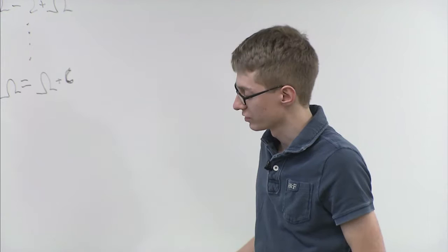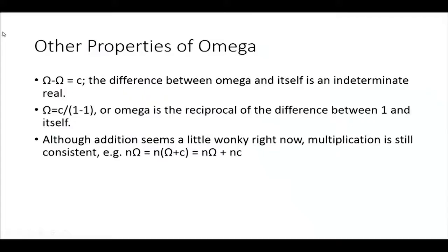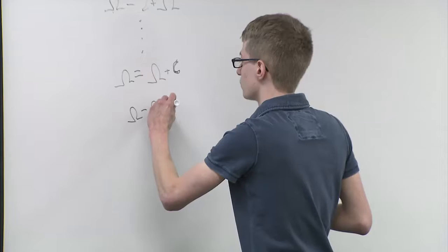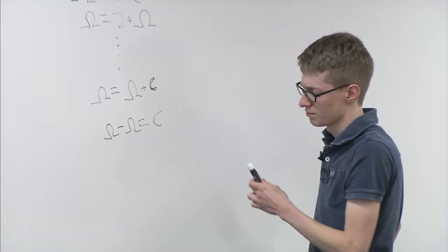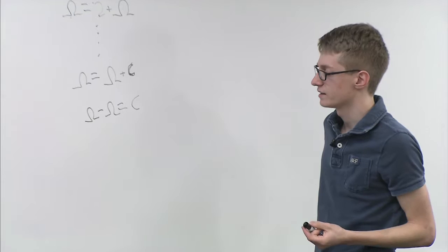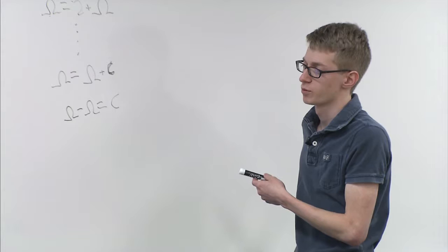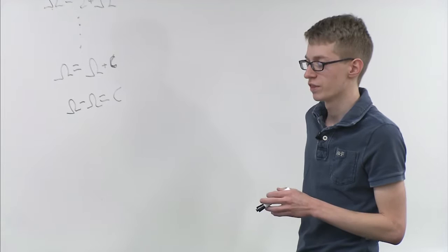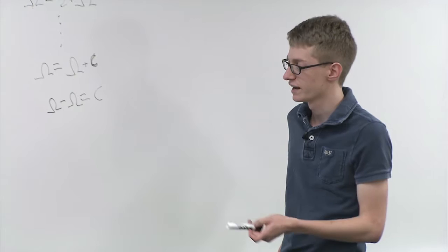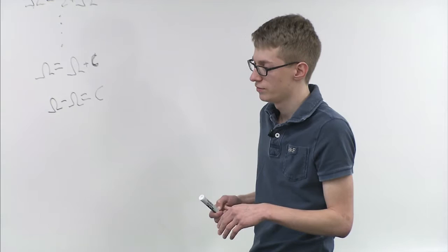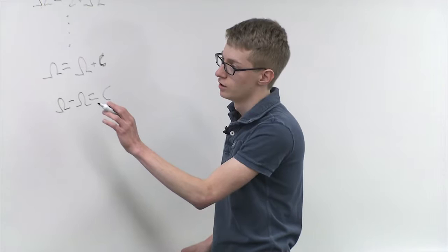We also note that the difference between omega and itself is c, by subtracting omega from both sides. C is an indeterminate integer — it can be anything. So when we subtract omega from omega, we have to keep in mind that we don't know what that difference will be. We know it's going to be an integer, but we don't have a set value. It's not equal to zero. The idea that a number minus itself equals zero doesn't work with omega, though multiplying by omega — like n times omega — is still consistent.